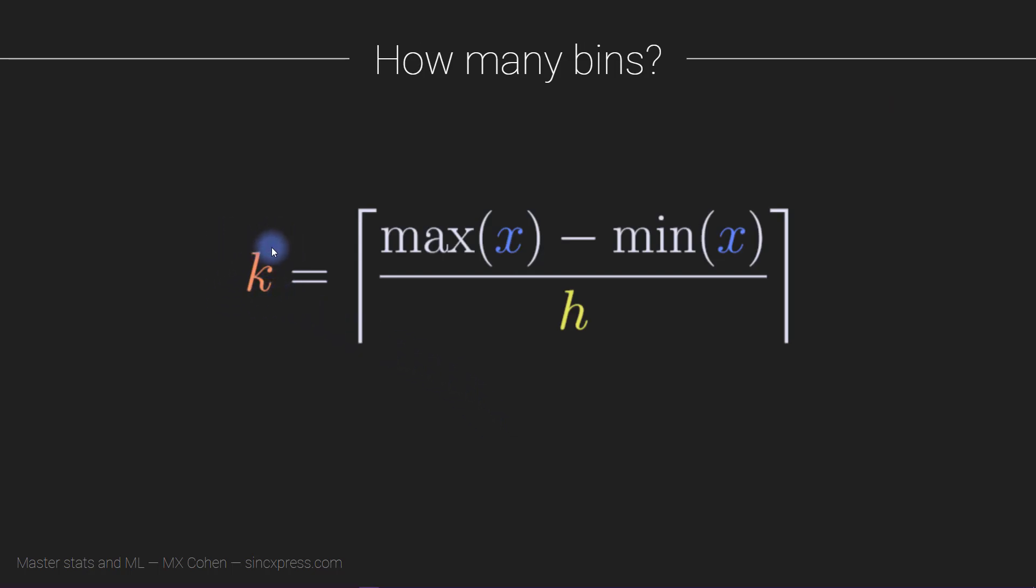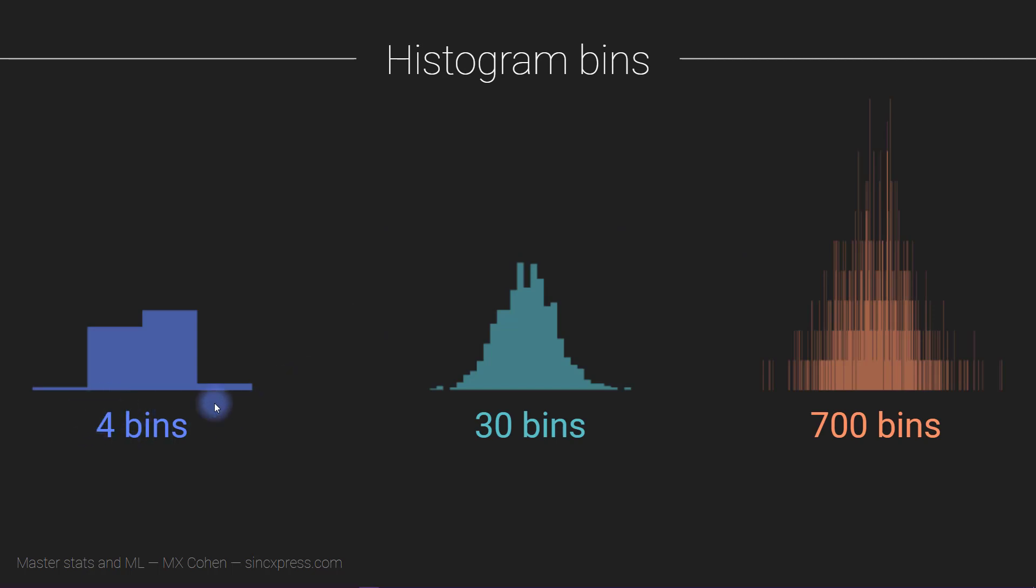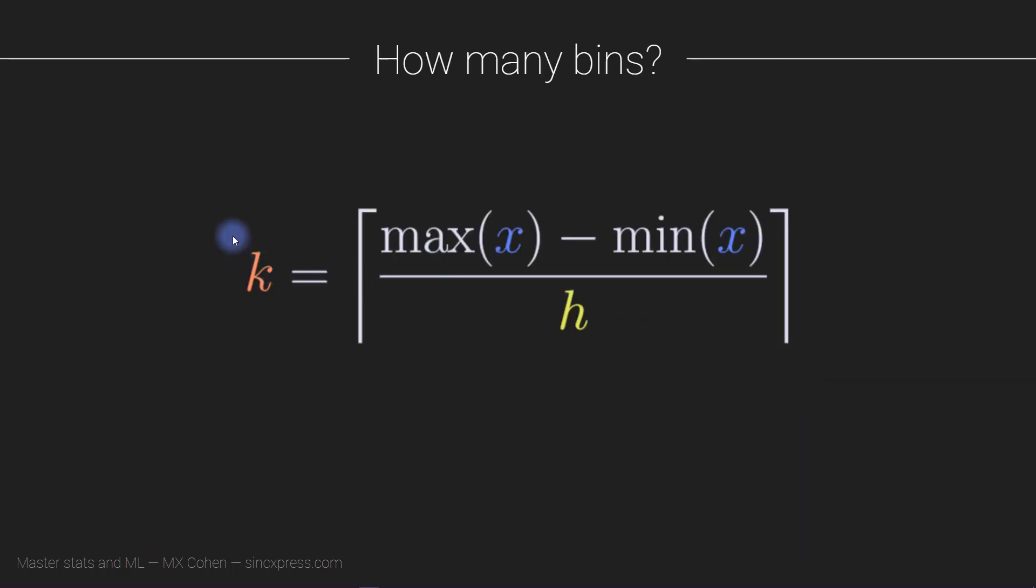In general, there are two ways to come up with a number of bins, also called the k parameter for histogram. So in this case, k would be 4, 30, and 700. Either you can just define k directly, and there are some methods where we plug in a formula that gives us the result for k, the number of bins. Or there are other methods that actually recommend an h, which is the bin width.